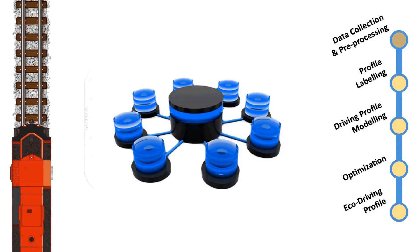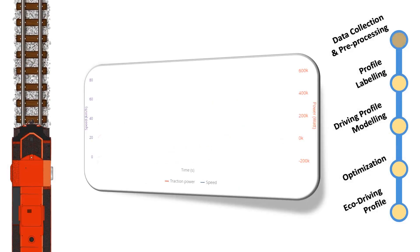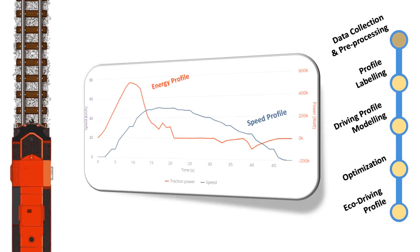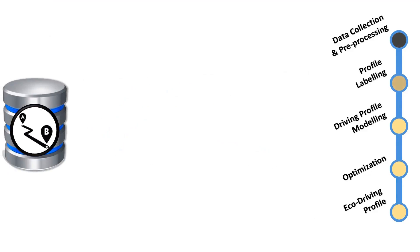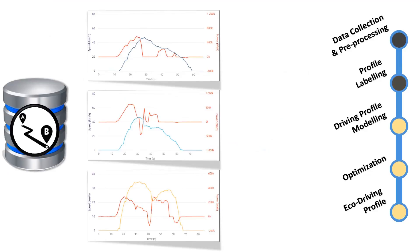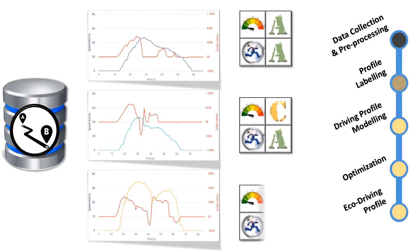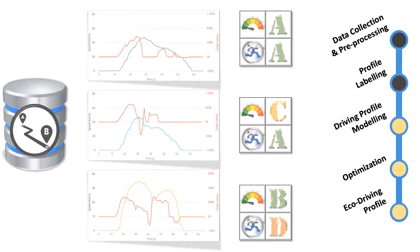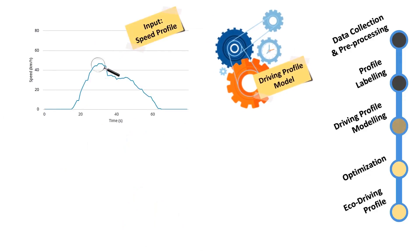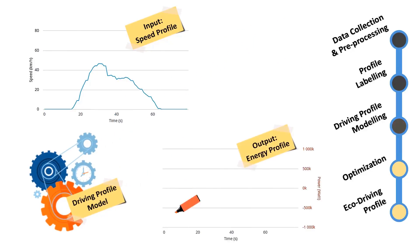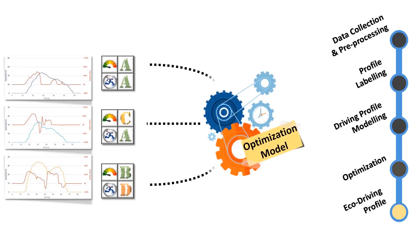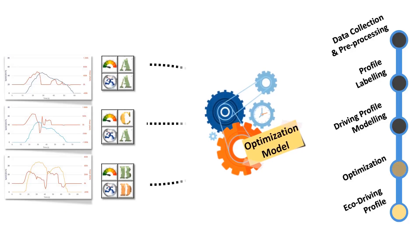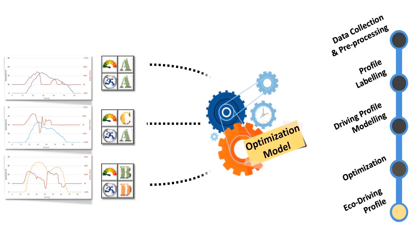Driving data are collected and pre-processed; they include speed and energy profiles. Each driving profile is evaluated by labels according to the travel time and the energy used. The driving behavior is also modeled to link the energy consumption to the speed profile.